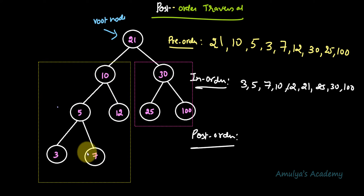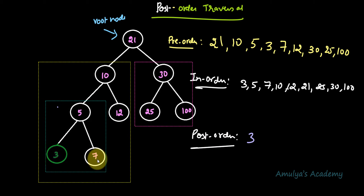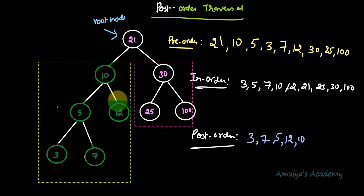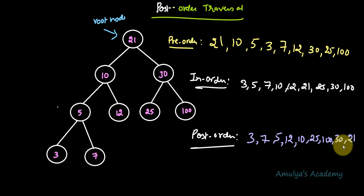Because we start from the left subtree, in that subtree this is the root node, this is the left subtree, and this is the right subtree. We start from the leftmost nodes — leaf nodes — so first 3, next right subtree so 7, then the root. Left subtree done; now visit the right subtree: 12, then root: 10. Left subtree completed. Now the right subtree: 25, 30, then root: 21. This is the order when we visit this BST using postorder traversal.